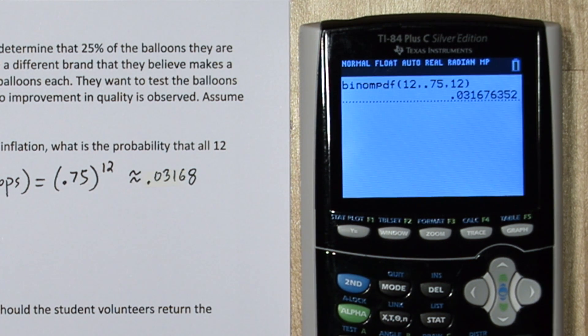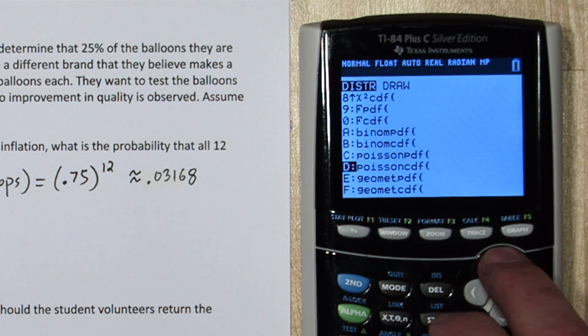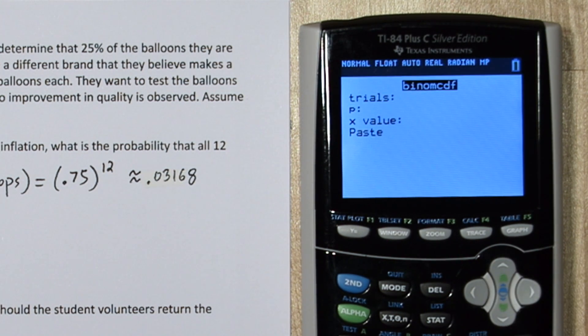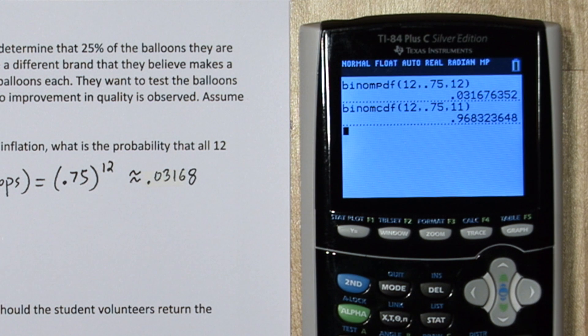You can also calculate this using Binomial CDF, the cumulative density function. Press 2nd and VARS again, and go to Binomial CDF. Now we still have 12 trials, and our probability of success is 0.75. But right here, we're going to put 11. Now what this probability represents is exactly 0, 1, 2, 3, 4, 5, 6, 7, 8, 9, 10,